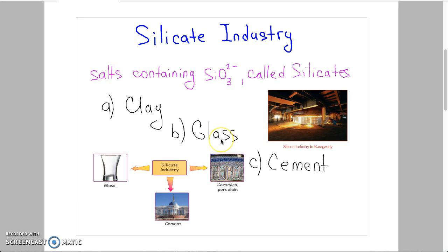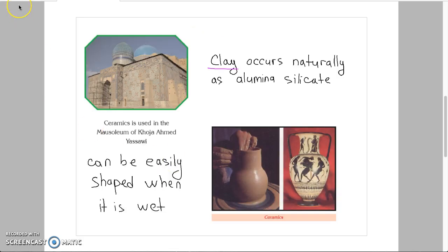Silicates are widely used to produce clay, glass, and cement. Kazakhstan has large reserves of natural resources for development of the ceramic industry, because the ceramic industry needs clay.